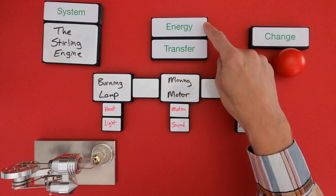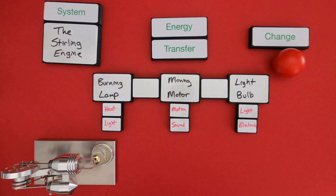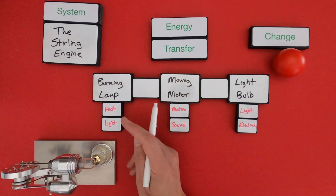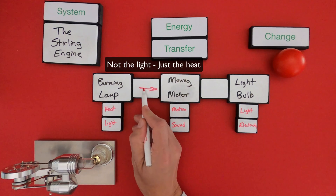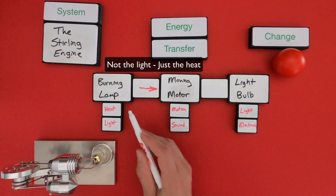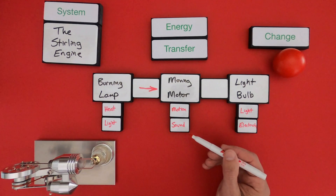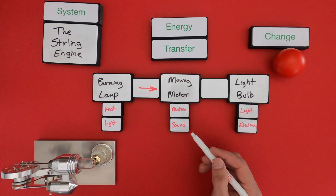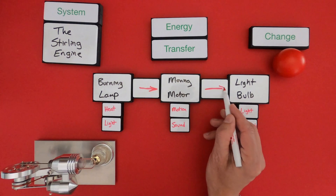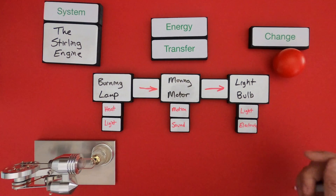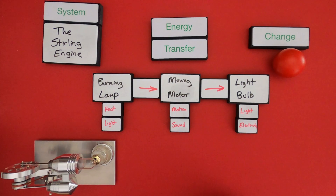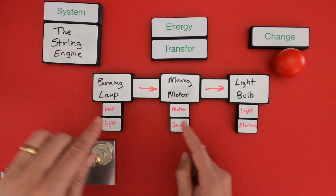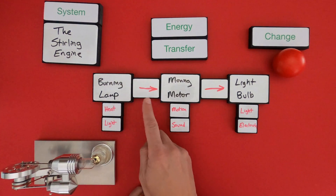I've shown the energy, but I really haven't shown energy transfer yet. Energy transfer is showing how that energy moves from one location to another, or from one object to another. That's what these arrows in the middle represent. The heat and light in the burning lamp is transferred — that arrow represents the flow of energy — into the motion and sound of the moving motor. Then that energy moves from the moving motor into the electricity and light of the bulb. On this model I've shown not only the types of energy, but also how the energy is transferred.